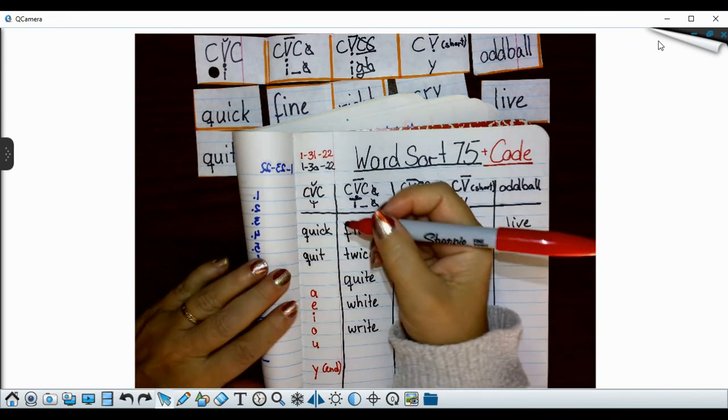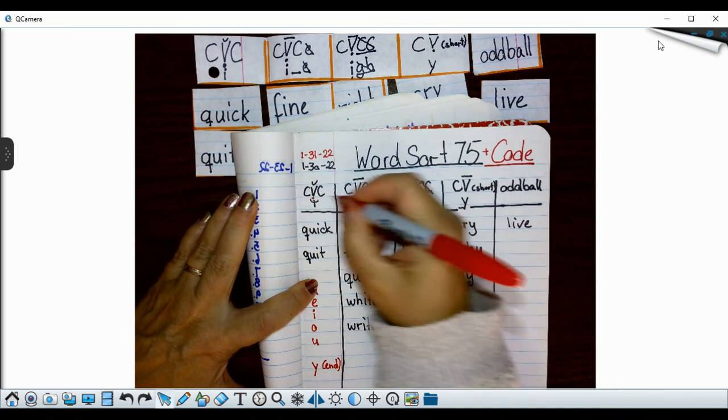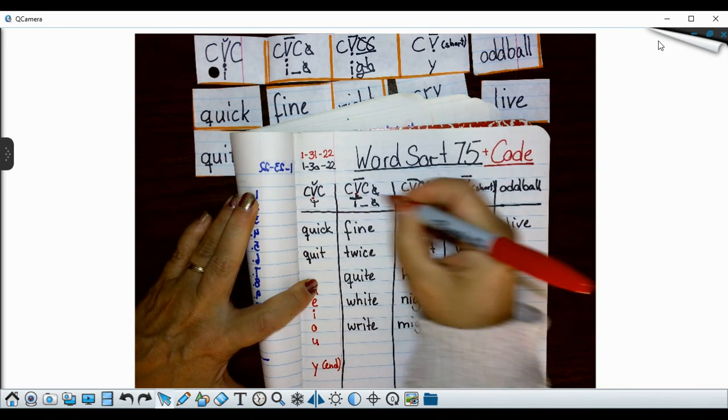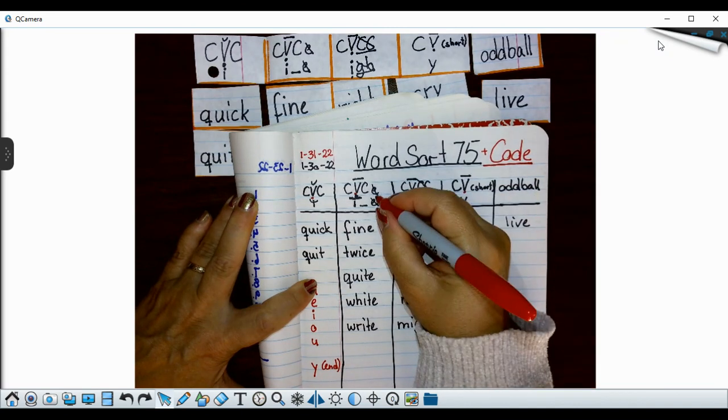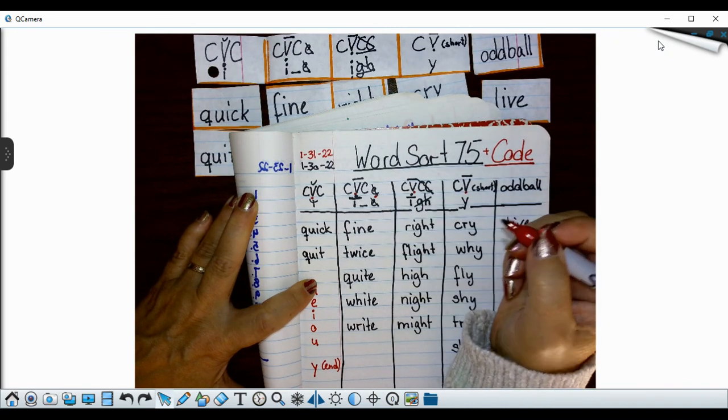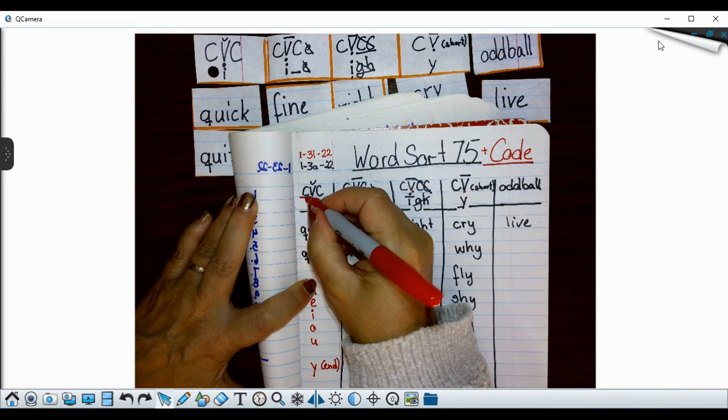All right so we're going to code. We know our vowels are always a dot and our silent E is also a vowel. Our consonants are always a line.